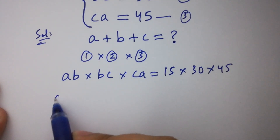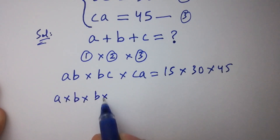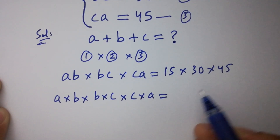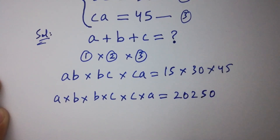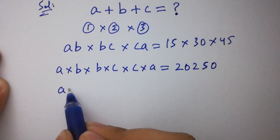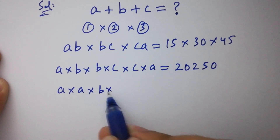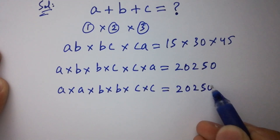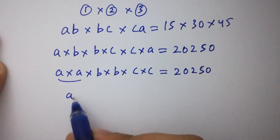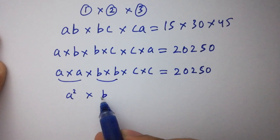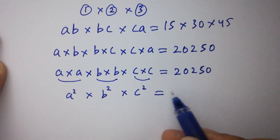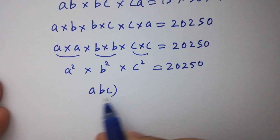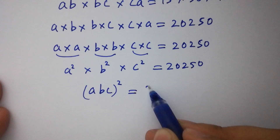This can be written as a times b times b times c times a equal to 15 times 30 times 45, which gives 20250. By rearranging, we have a squared times b squared times c squared equal to 20250. This is the same as (abc) squared equal to 20250.